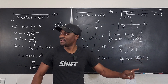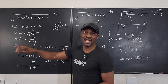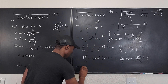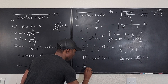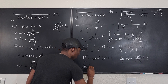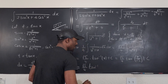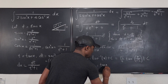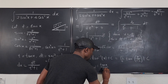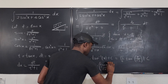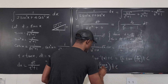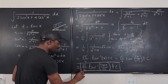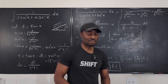And t was tan(x) from the beginning, so the final answer is square root of 2 over 4 times arctan(tan(x) divided by square root of 2), plus C. This is the solution to this integration problem.